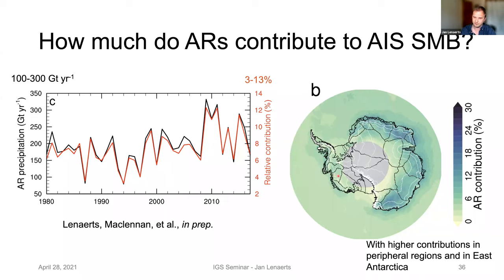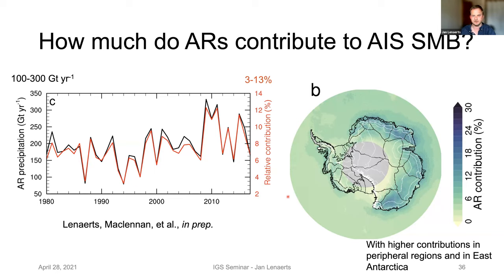Strikingly, both of these curves almost overlap, which means that the interannual variability in total precipitation on Antarctica is largely, if not entirely, driven by the variability in atmospheric rivers. ARs almost entirely explain the interannual variability of precipitation on Antarctica. Spatially, the East Antarctic coast really stands out — less so in West Antarctica and less so in the ice sheet interior. This is highly dependent on how we define ARs. There is a strong discussion in the community about how to exactly define an AR, because an AR on Antarctica is much drier and colder than one hitting the Pacific Northwest — so it's harder to define.